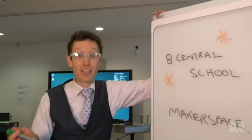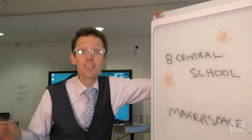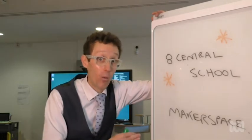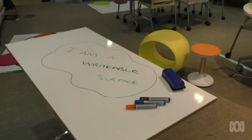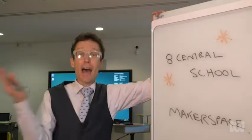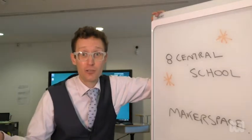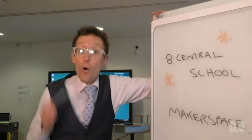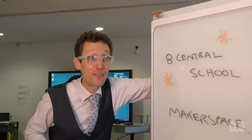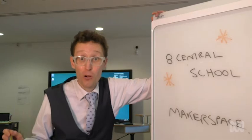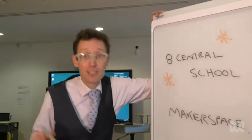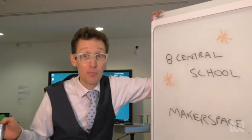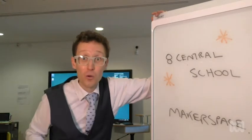One of the features you might like to consider adding to your makerspace are writable surfaces. Think mobile whiteboards, think writable tables, think writable walls, and what about all the glass you've got in your classroom? All these surfaces can be written on with whiteboard markers. What a great way for students to ideate solutions to problems — it fits perfectly into the problem-based classroom and the design thinking process.